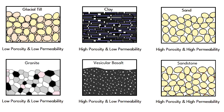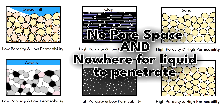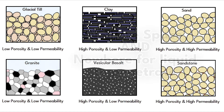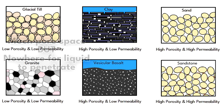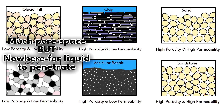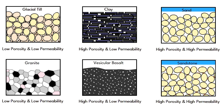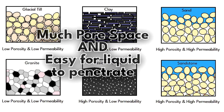Low porosity usually results in low permeability because if there aren't very many pore spaces, it'll be harder to find a path through them. However, high porosity does not always indicate high permeability. For example, clay can have very high porosity, often more than 50%, but the spaces are small and isolated, making it very difficult for water or anything else to move through.